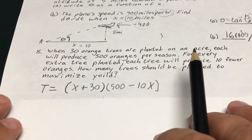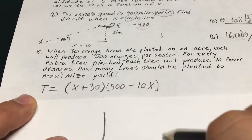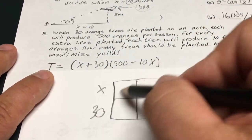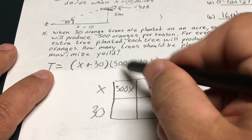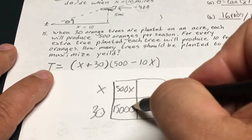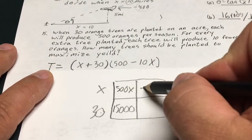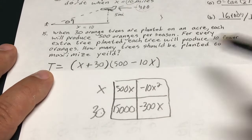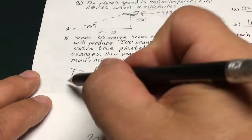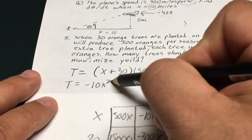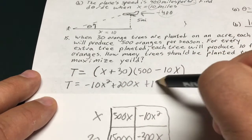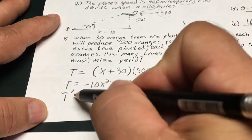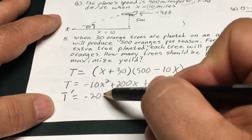So I'm going to foil that out because I don't want to use product rule. So when I set up a Punnett square to foil this out, that's going to be 500 on the top end. X plus 30 on the side. X times 500 is 500x. 30 times 500, I believe it's 15,000. And then X times negative 10 is negative 10x squared. And there's my maximization. It's noticing that it's negative x squared. And that's going to give me negative 300x. So when I bring this all together, this is going to give me a function where negative 10x squared plus 200x plus 15,000 oranges. All right. I'm going to take the derivative of that. So the derivative is going to equal negative 20x plus 200.